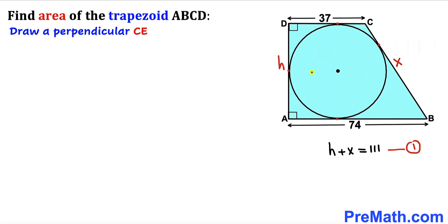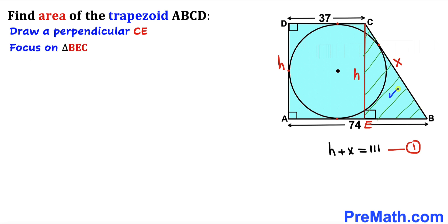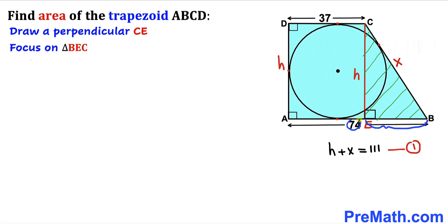Next, let's draw some auxiliary lines. I'll drop a perpendicular from point C onto line AB; this line CE is our perpendicular. Since AECD is a rectangle, the side length CE equals the height H. Now focusing on triangle BEC: the full base AB is 74 units and CD is 37 units, so side EB equals 74 minus 37, which gives us 37 units. This is a right triangle, so we'll apply the Pythagorean theorem.